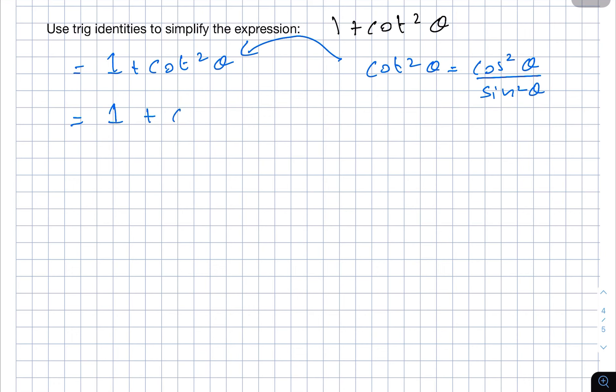plus cos²θ over sin²θ. And in the next step we can write both terms with a common denominator, which we will get by multiplying 1 by sin²θ in the numerator and denominator as well. So we get